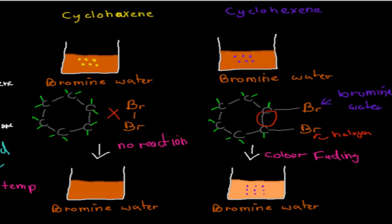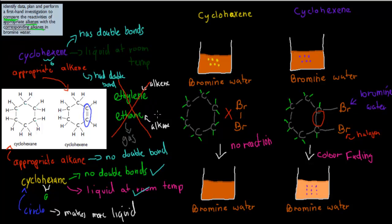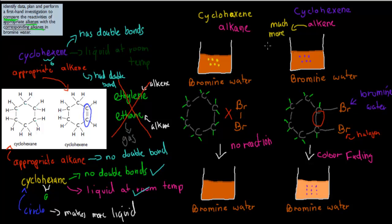So going over the whole experiment: the dot point was to plan and perform a first-hand investigation to compare the reactivities of appropriate alkenes with corresponding alkanes in bromine water. Cyclohexane, which is an alkane, showed no reaction, compared to cyclohexene, which is an alkene that has a double bond — and that showed a reaction because the bromine attached to the cyclohexene and made the color fade. This experiment helped us understand that if you have a double bond, you are much more reactive. So all alkenes are much more reactive than alkanes — much more reactive because of the double bond.